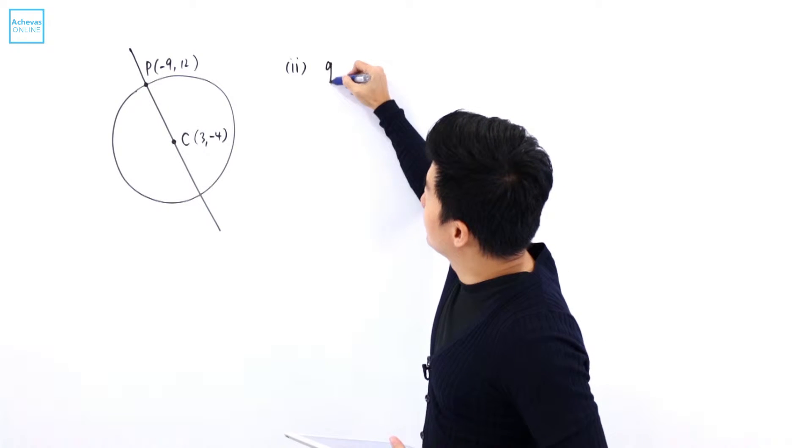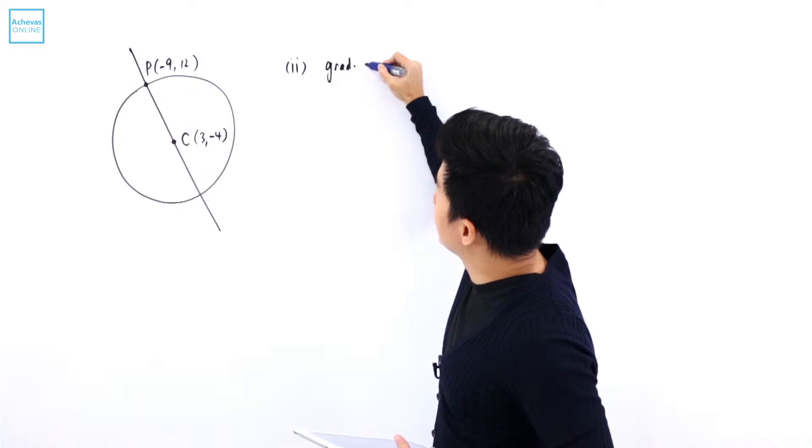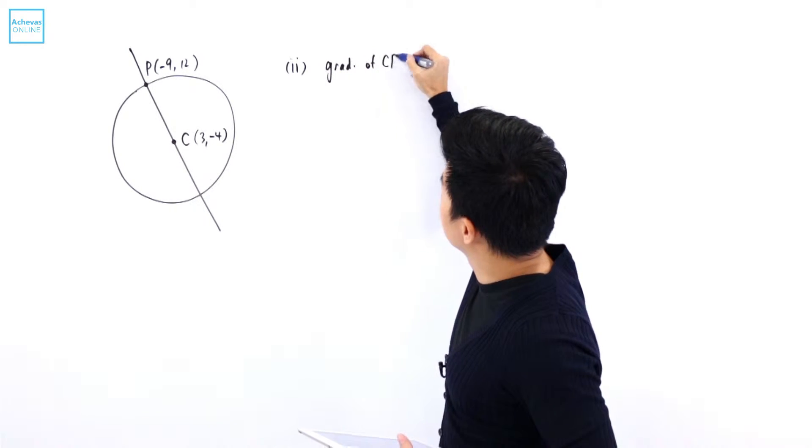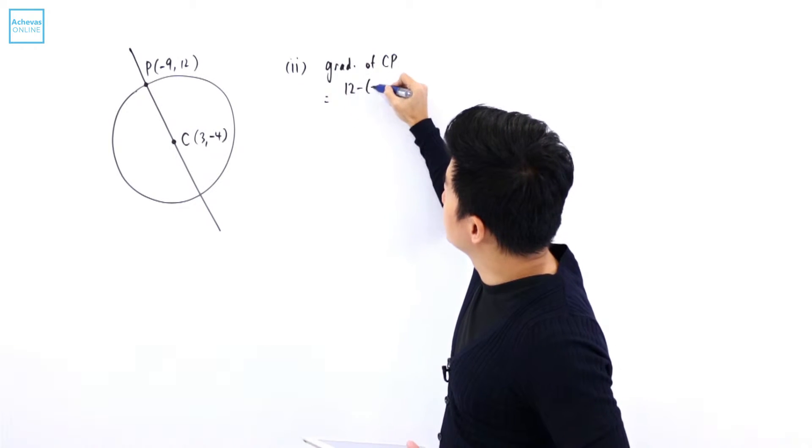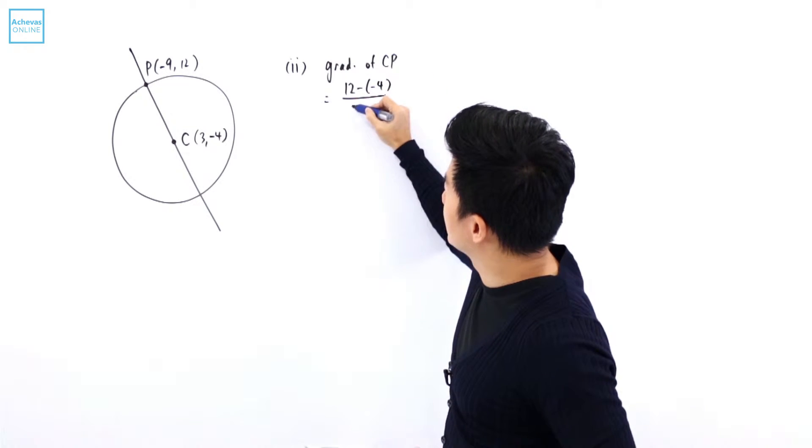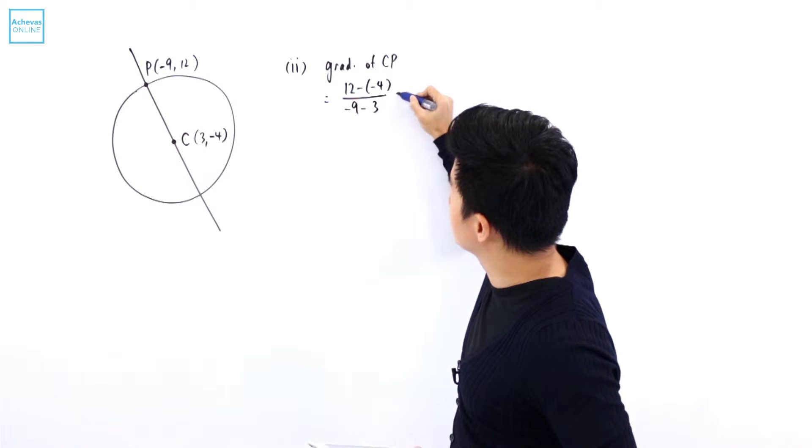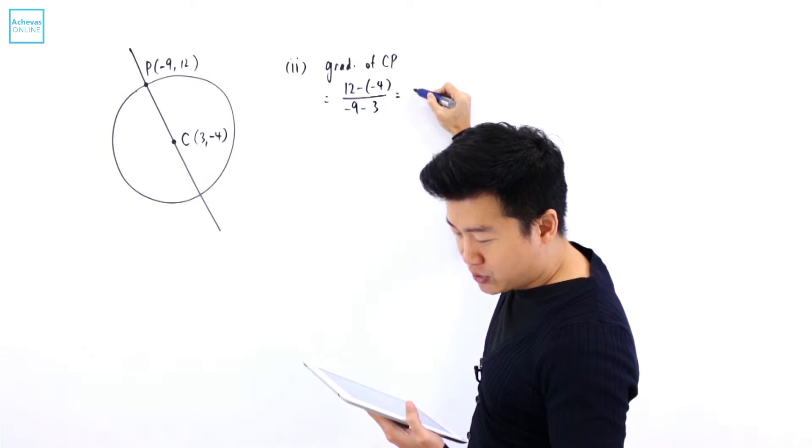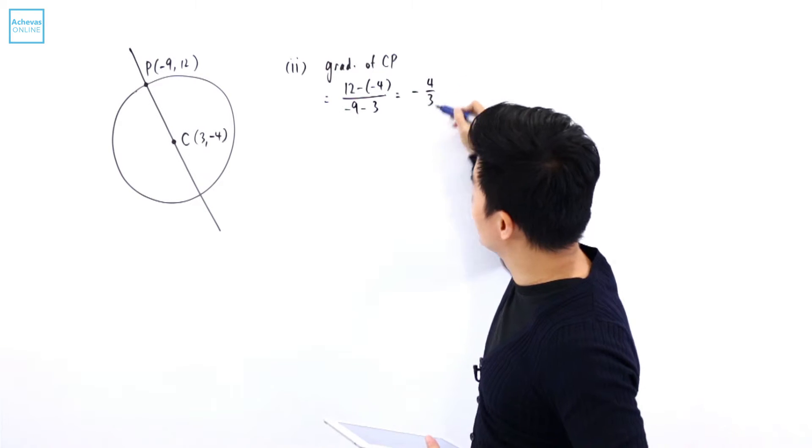So first, let me find the gradient of this line CP. This is equal to 12 minus minus 4 divided by minus 9 minus 3. This is equal to minus 4 over 3.